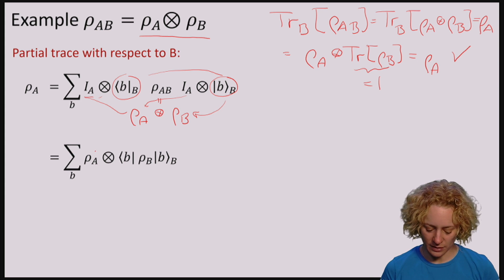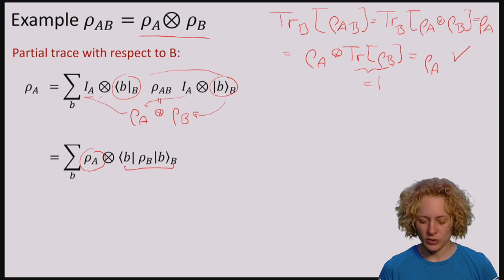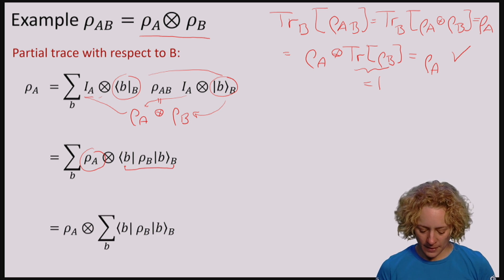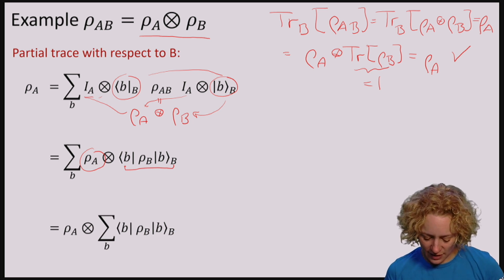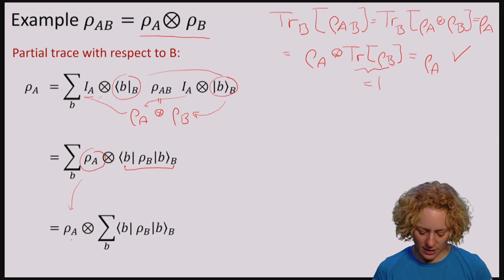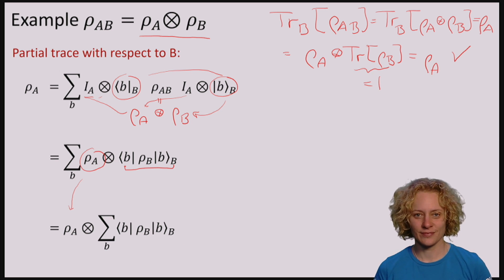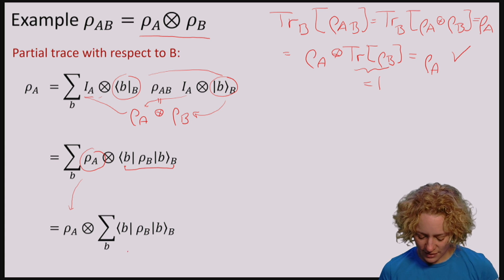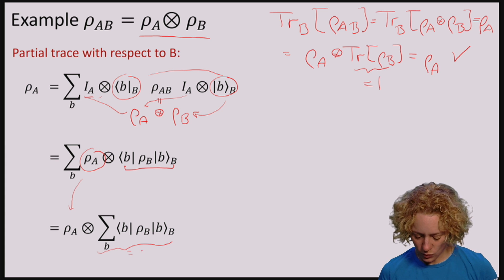Where here I've done nothing, applied the identity, and here I put it in between the Bs. So let me now take this ρ_A and put it outside. So we have ρ_A tensor something that looks like this. So you might want to convince yourself that in fact this here is again just one.